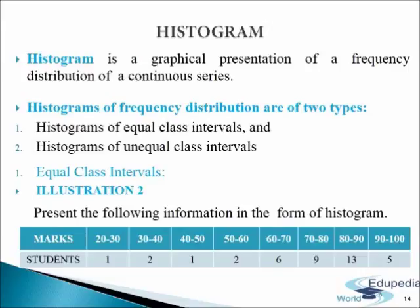Histograms of frequency distribution are of two types: histograms of equal class intervals and histograms of unequal class intervals. Histograms of equal class intervals are those based on data with equal class intervals. A series with equal class intervals would make a histogram including rectangles of equal width. Length of the rectangles would be different in proportion to the frequency of the class intervals. Class interval is taken on the x-axis in which breadth of rectangle is equal to class size. Frequencies are taken on the y-axis, and height or length of rectangle is equal to frequency of the corresponding class intervals.